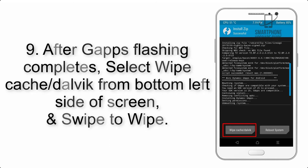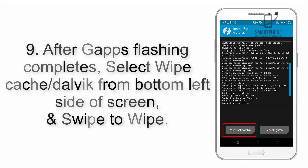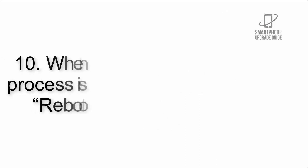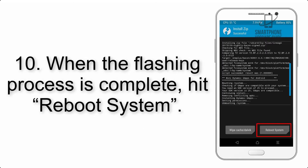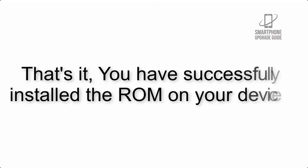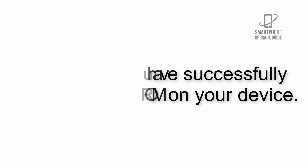Step 9: After GApps flashing completes, select Wipe Cache and Dalvik from the bottom left side of the screen and swipe to wipe. Step 10: When the flashing process is complete, hit Reboot System. That's it — you have successfully installed the ROM on your device.